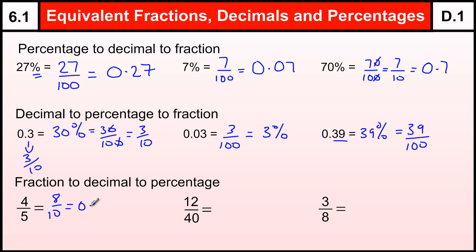That's 8 tenths, which is 0.8. And if you think about that as a digit decimal, that gives you 80%. So that's one way of doing it.